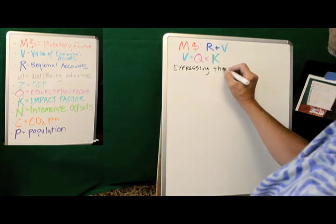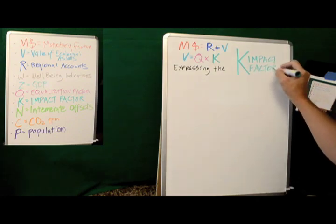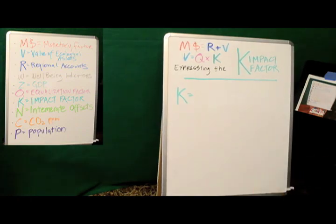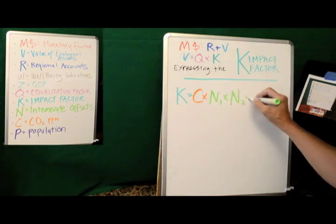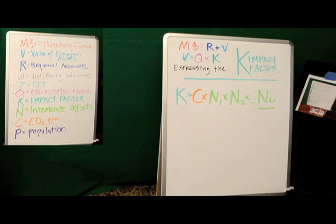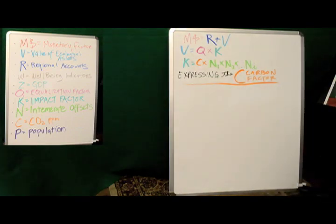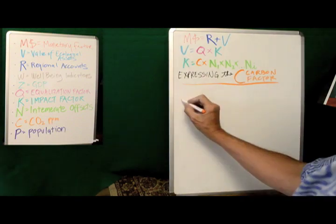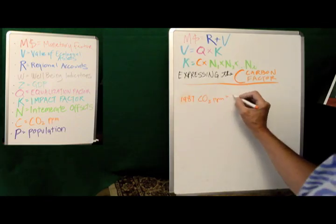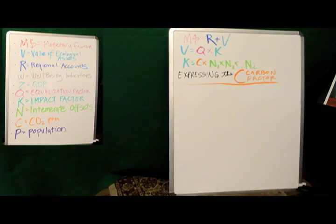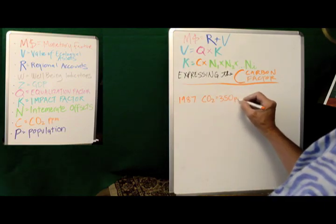The next variable in determining the value of our ecological assets is K, or the impact factor, where V equals Q times K. K equals C times N1 times N2 times N3, and so on. The subscript I that you see following the N is just a counter. Here, we're going to determine the value of C, or the carbon factor. So, 1987, carbon in our atmosphere was equal to 350 parts per million. The overabundance of carbon in our atmosphere is what scientists have identified as being one of the leading sources of climate change.